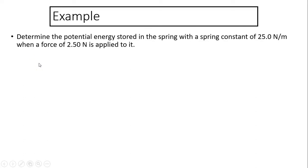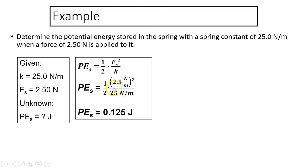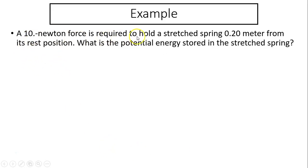Example: Determine the potential energy stored in a spring with spring constant 25 newtons per meter when a force of 2.5 newtons is applied. We know k and Fs, so use PEs equals Fs squared over 2k. Substituting: PEs equals 0.125 joules. Alternatively, you can find x first using Hooke's Law (Fs equals kx), then substitute into PEs equals one half k x squared to get the same answer.